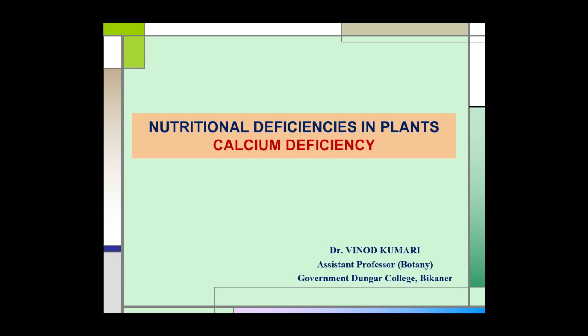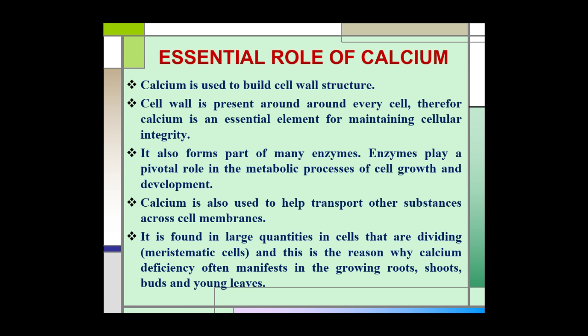Let us start with the essential role of calcium in plants. Calcium is used to build cell wall structure, and the cell wall is present around every cell. Therefore, calcium is an essential element for maintaining cellular integrity.